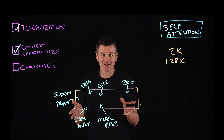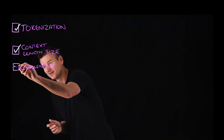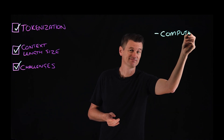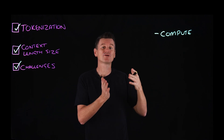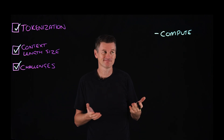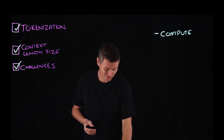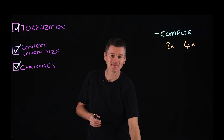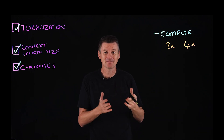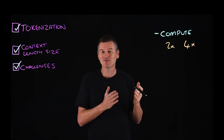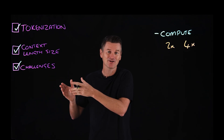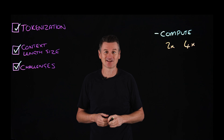So the bigger the context window, the better, right? Well, larger context windows do present some challenges. The most obvious one is compute. Compute requirements scale quadratically with the length of a sequence — meaning as the number of input tokens doubles, the model needs four times as much processing power to handle it. Remember, as the model predicts the next token in a sequence, it computes the relationships between that token and every single preceding token. So as context length increases, more and more computation is required.